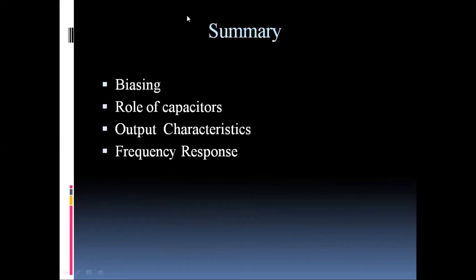To conclude the CE amplifier circuit: in the CE amplifier we use voltage divider biasing, which increases the stability of the circuit. Different capacitors are used to increase the gain of the circuit. From the output characteristics, we see an inverted output compared to the input signal, meaning a 180-degree phase shift. The frequency response is affected at lower frequencies by the input coupling and bypass capacitances, and at higher frequencies by the inter-junction or inter-electrode capacitances present in the circuit.